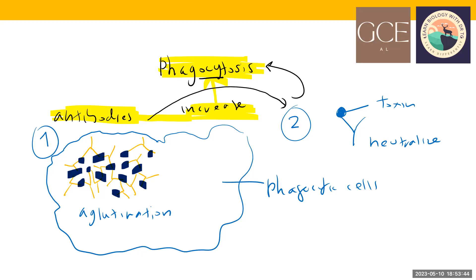Agglutination — clumping and trapping all bacteria in one place — is how antibodies increase the phagocytic process. So far, the activation of adaptive immunity: B-cells, T-cells, cytotoxic T-cells, T-helper cells all activate. The end result is production of antibodies by B-cells, cytotoxic T-cells killing infected cells, and B-cells continuously producing plasma cells. This process keeps going until the pathogen is completely eliminated.